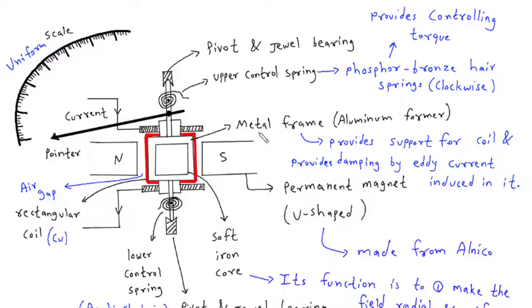And of course, we'll observe the graceful movement of the pointer along a uniform scale, which grants us precise current measurements.